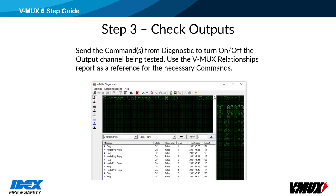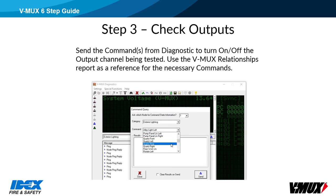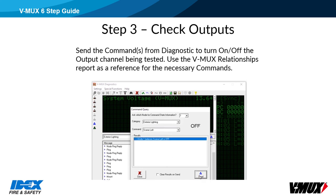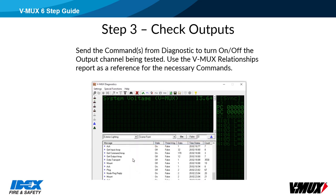You can use diagnostics to determine if a command is on or off by asking any node in the network. Click Special Functions, then Command Query. Select which node will be asked, choose the appropriate command category, and then select the command. Click Send, and a response will show if the command is on or off. In this example, the scene left command was off, so we enabled the switch and asked again — this time the command was on. If the output is not on and you determine that it has all the commands it needs, and the output shows no diagnostic faults, then the output FET might be blown and the node would need to be sent back to the factory for repair.